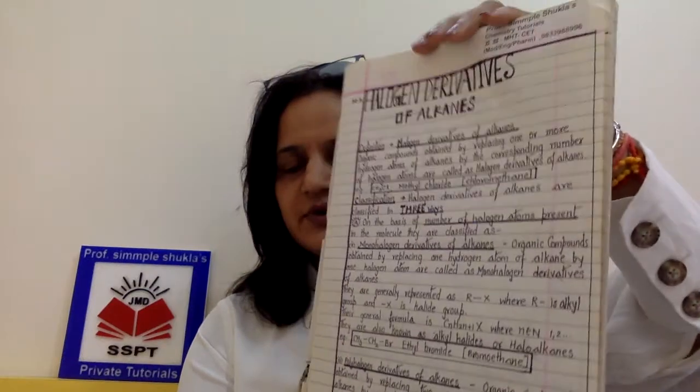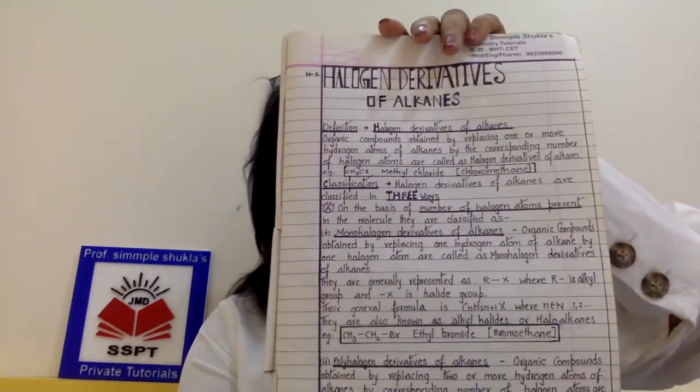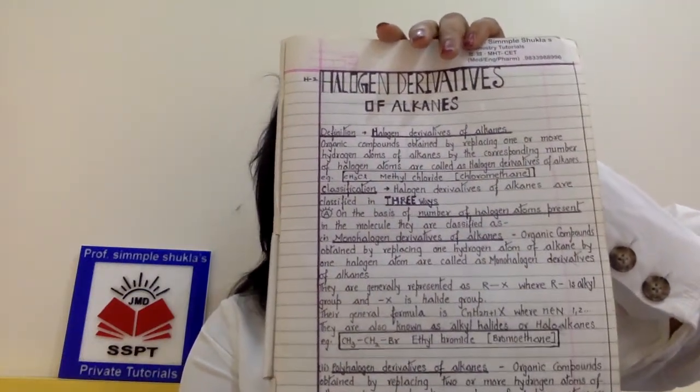Hey students, we have completed the first part of halogen derivatives, that is with respect to the classification. We have completed four pages of our notes, or you can say the government textbook or the NCERT textbook. Now these are the notes which I have made for you — I will be sending the PDF to you today. Copy the notes in the fair notebook.